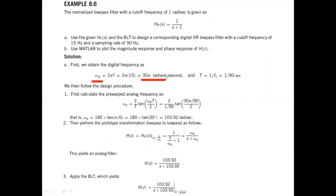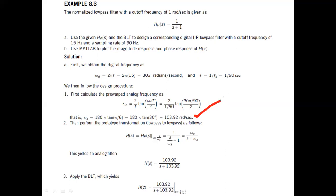T equals 1 divided by the sampling frequency — 1 by 90. So the first step is pre-warping, the second is design of the analog filter, and the third is applying the bilinear transformation. Using the formula: 2 divided by T, where T = 1/90, multiplied by tan of (omega_D times T divided by 2), we get the pre-warped analog digital frequency of 103.92. The digital cutoff was 30π, which is approximately 95 or so, and here we got a little more at 103.92. Let us stick to the formulae and follow the rules.